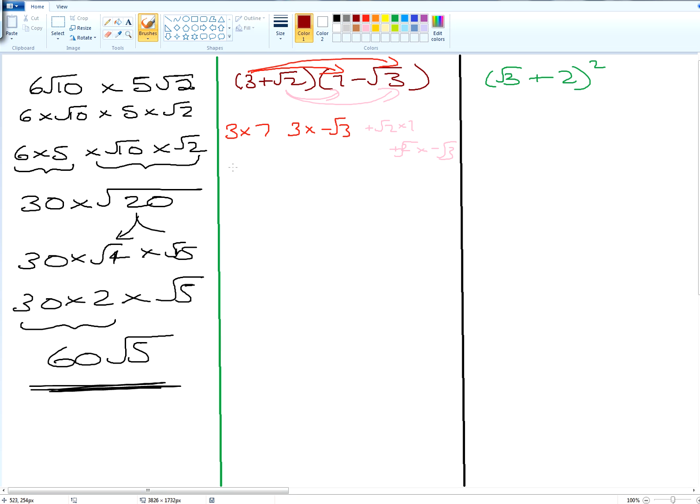Let's work it out now. 3 times by 7 is 21. And 3 times by minus root 3 is minus 3 root 3. And we have plus root 2 times by 7 will give us plus 7 root 2. And then we have minus root 3 times by plus root 2 will give us minus root 6. And that is the answer to that question. It doesn't go any further because there's nothing else to simplify.